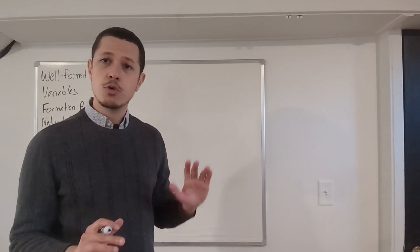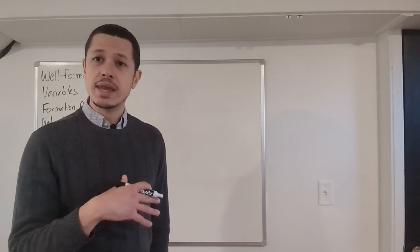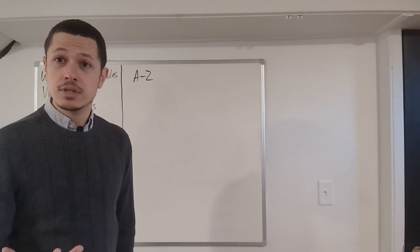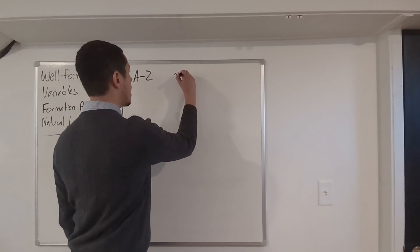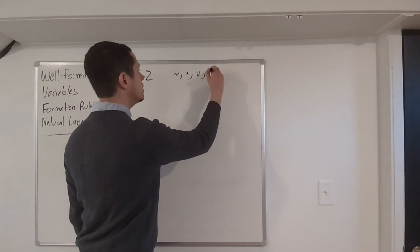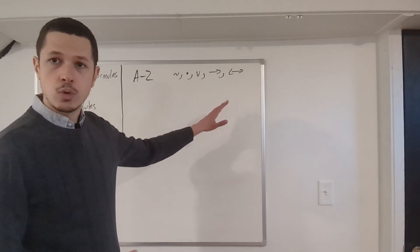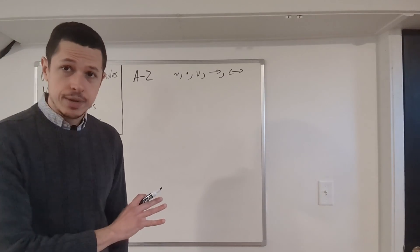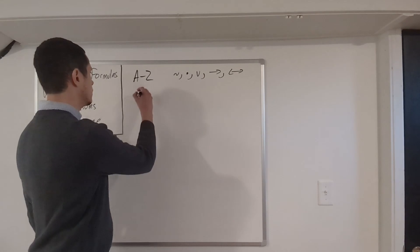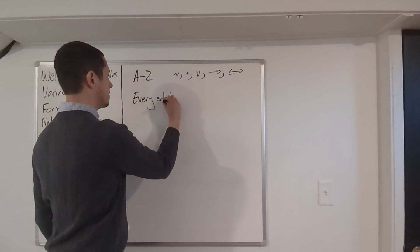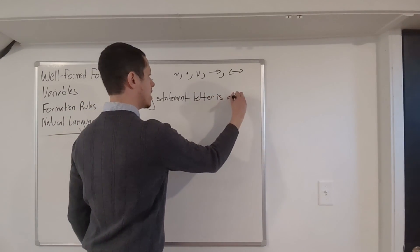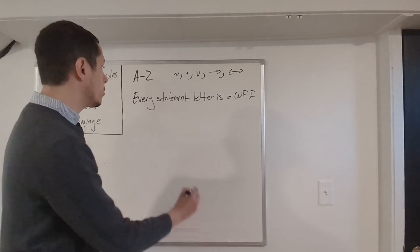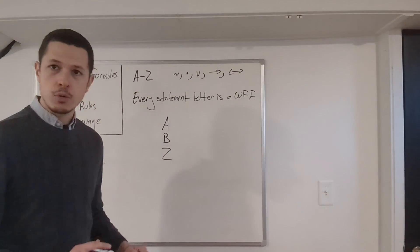Let's start with the most basic formation rule. The vocabulary of statement logic includes the capital letters A through Z — each one stands for an atomic statement — and your connectives: the tilde, the dot, the V, the arrow, and the double-headed arrow, which stand for respectively not, and, or, if-then, and if-and-only-if. The first formation rule tells us every statement letter is a well-formed formula. So A is a well-formed formula, B is a well-formed formula, Z is a well-formed formula, and everything in between.